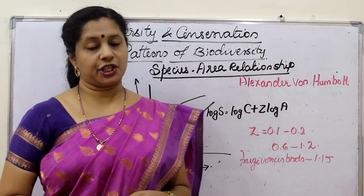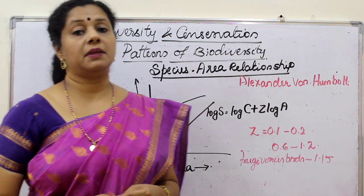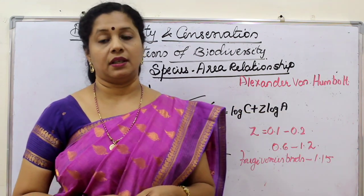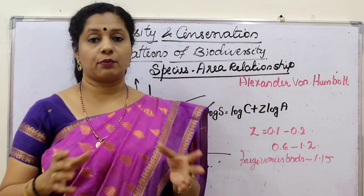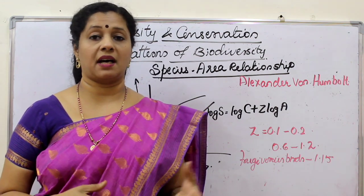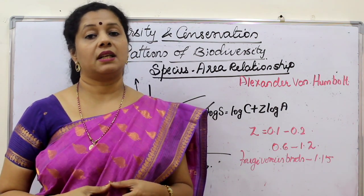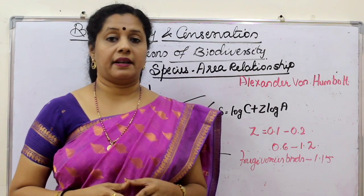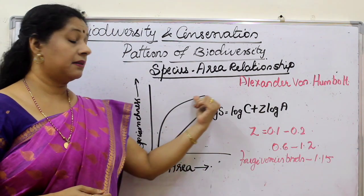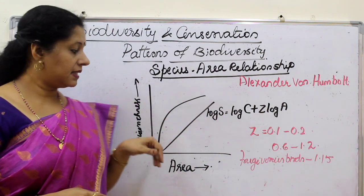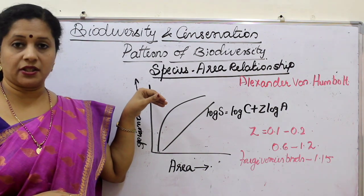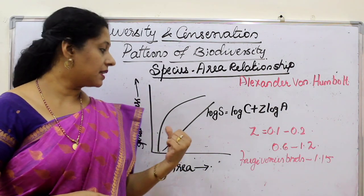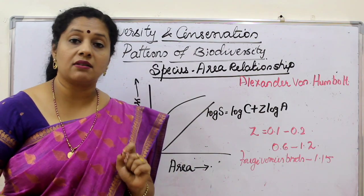Species-area relationship was first studied by German naturalist and geographer Alexander von Humboldt. He studied the diversity distribution of different organisms — plants, birds, amphibians, and others. He found that when all these are represented as a graph, it ends up in a rectangular hyperbola. On the y-axis, we mark species richness, and on the x-axis, we mark area. The graph results in the shape of a rectangular hyperbola.